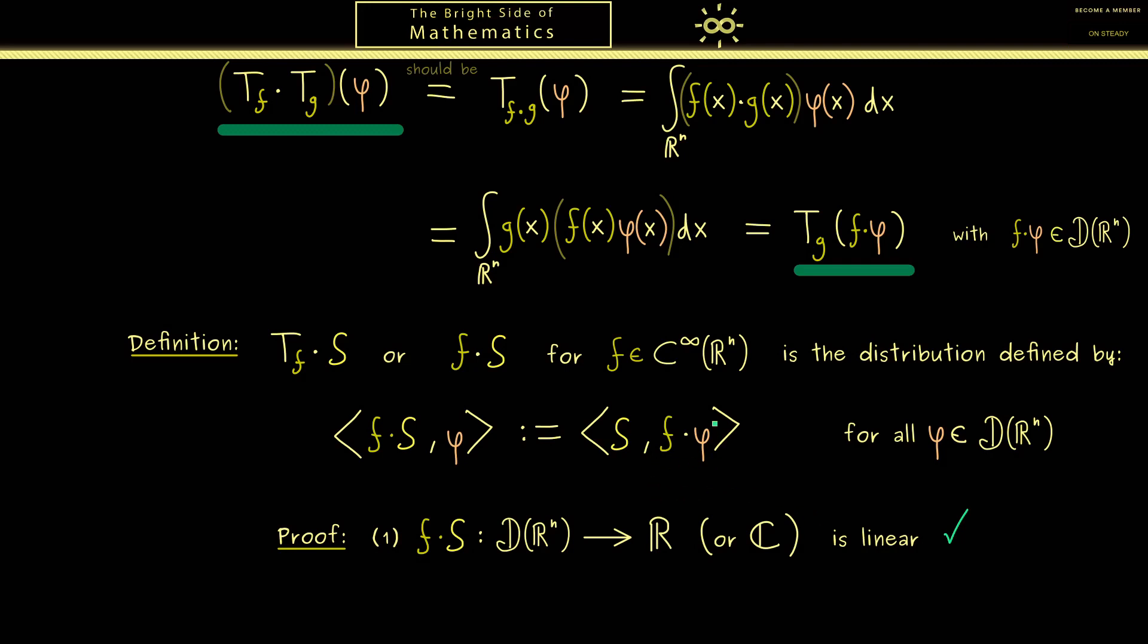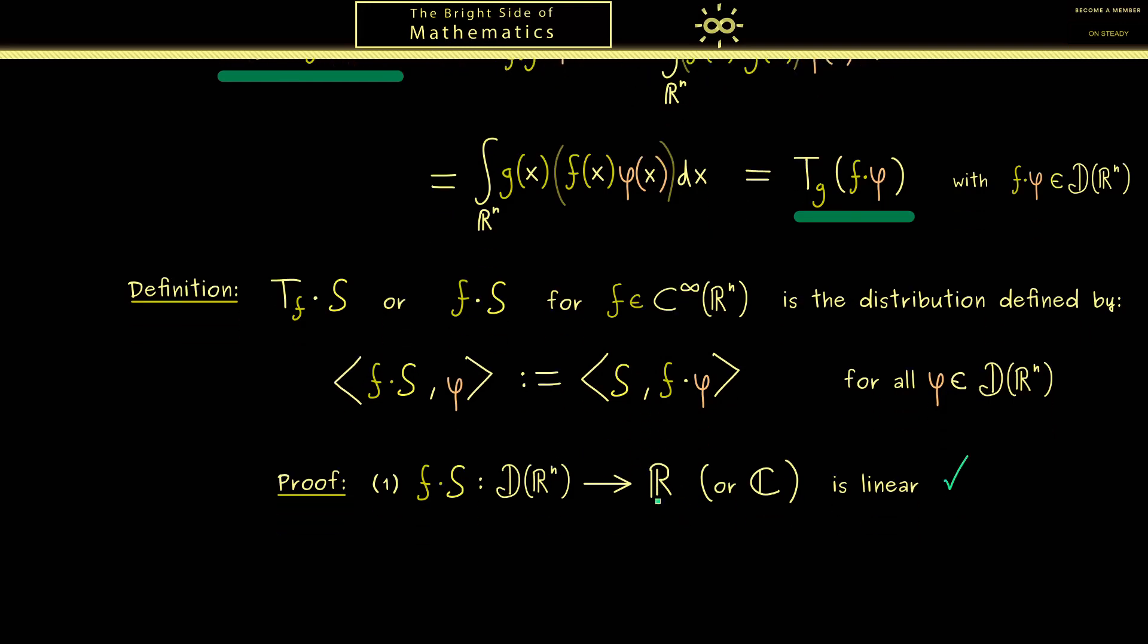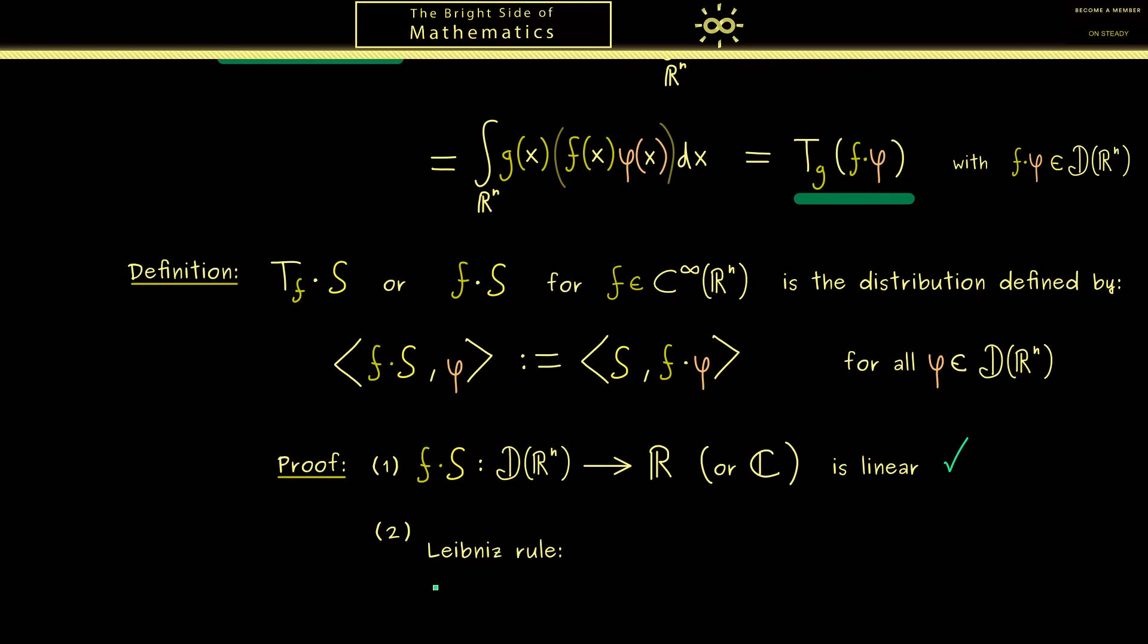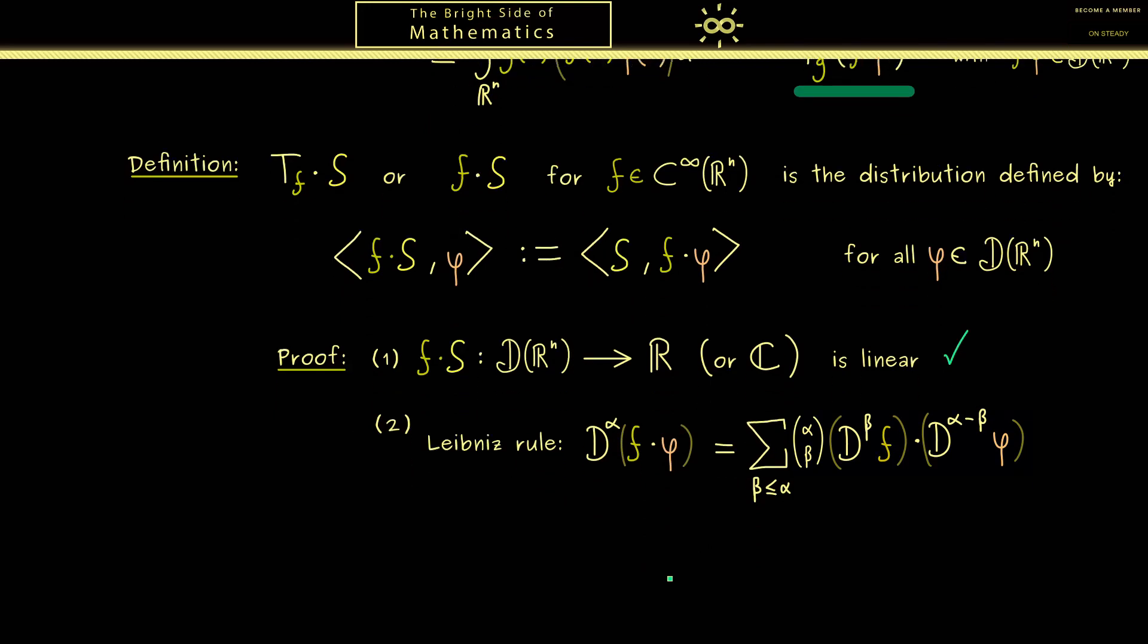More precisely, we know that the addition and scaling is no problem at all here in the second argument. Therefore we only have to show the continuity now. In fact, the only ingredient we need here is the Leibniz rule for partial derivatives. It's simply the product rule when we want to calculate the partial derivative of a product. However, please note here we use multi-indices β and α. And then this general product rule tells us that we sum over all combinations where we have β is less or equal than α, and then we have ∂^β and ∂^{α-β}. Now for us here the explicit formula is not important. It's only important that we have a finite sum here. Because then we can simply use the characterization for distributions from video Part 5.